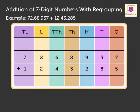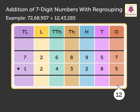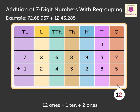First, we add the numbers in the ones column: 7 and 5. We get the number 12. Regroup the 12 ones to 1 ten and 2 ones. Carry the 1 ten to the tens column and write 2 in the ones column.